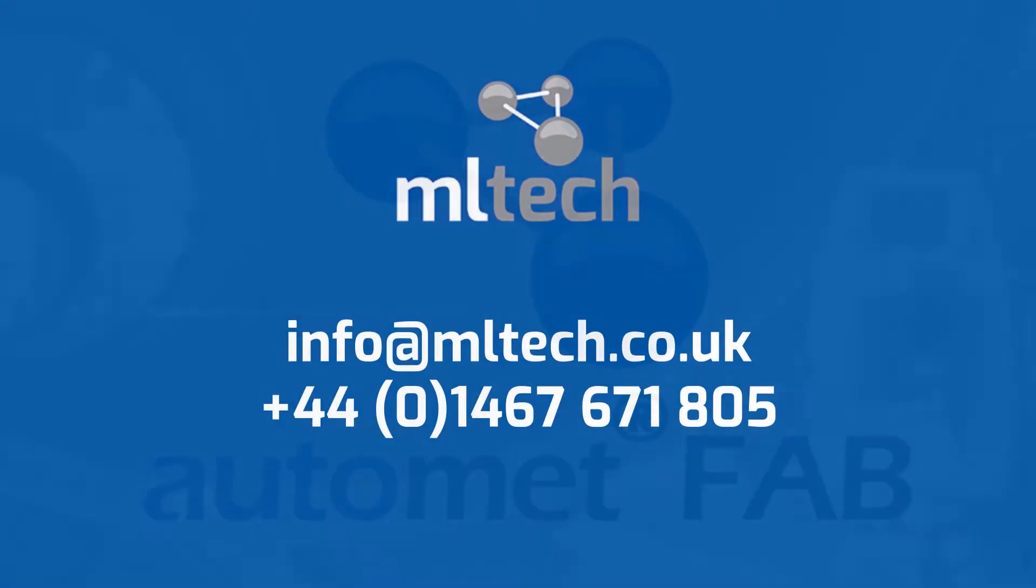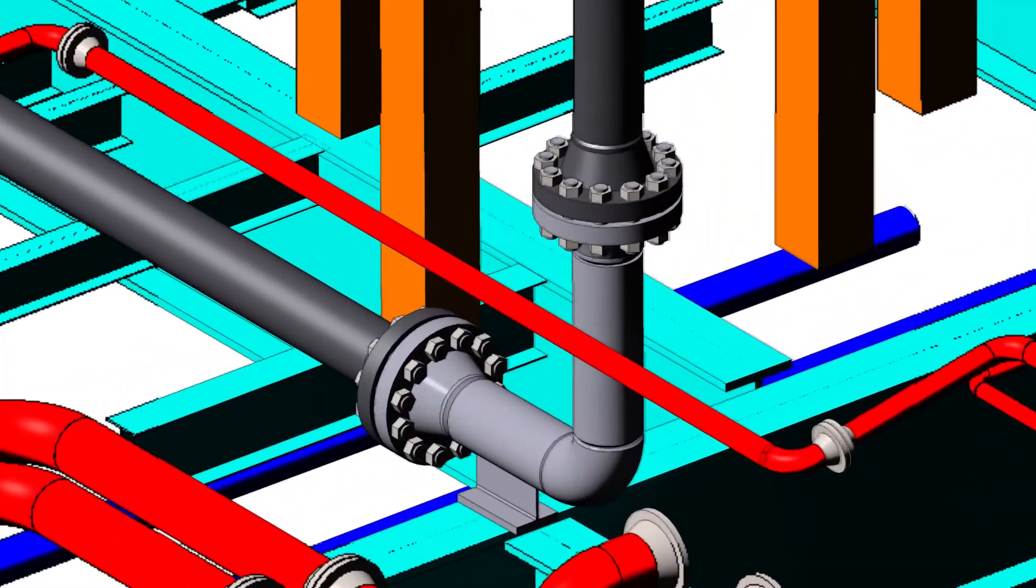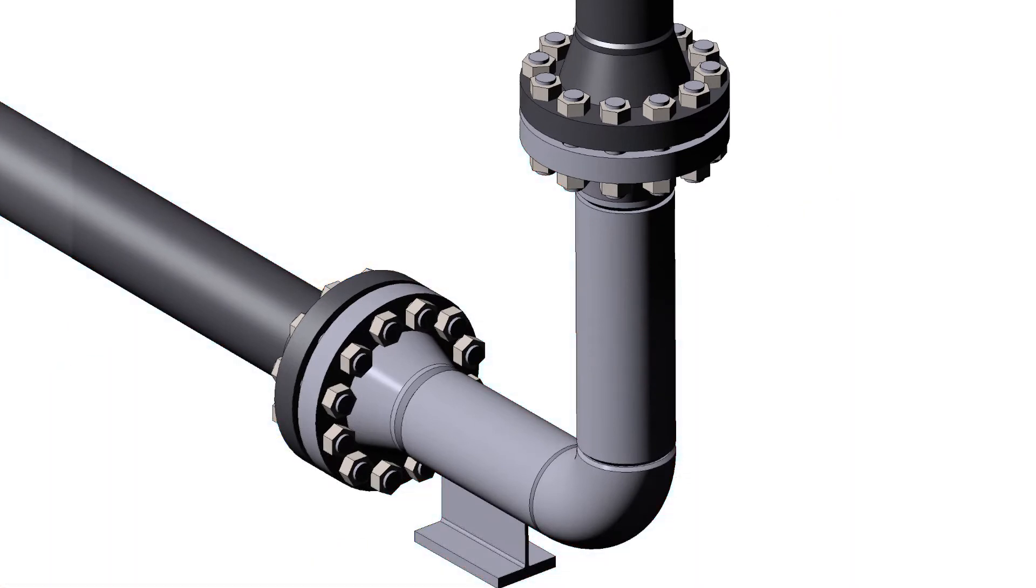This is a demonstration of using our AutoMET fab system to fabricate a replacement for a section of pipework. Let's go through an example. Suppose this section of pipework is to be replaced.